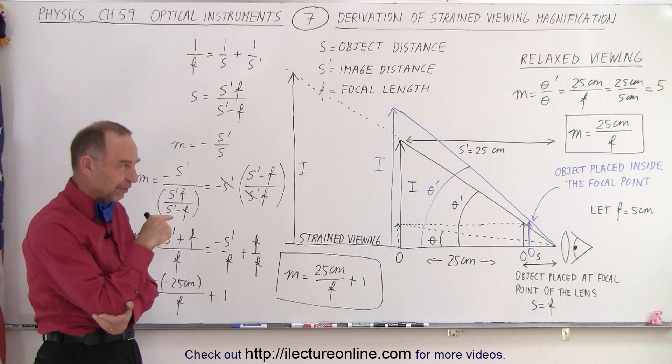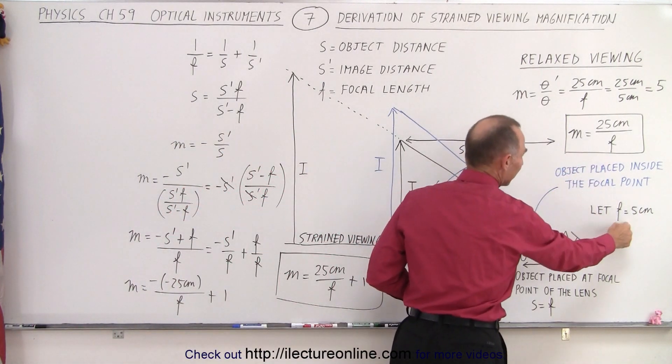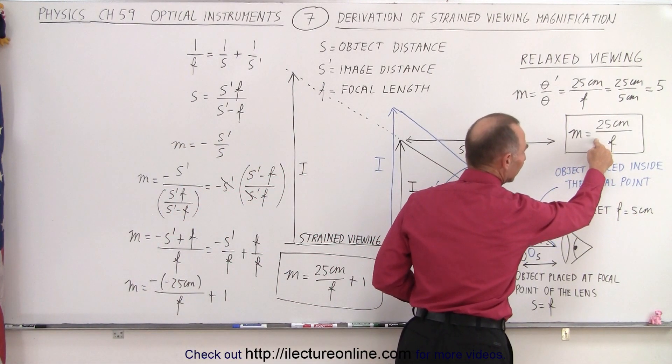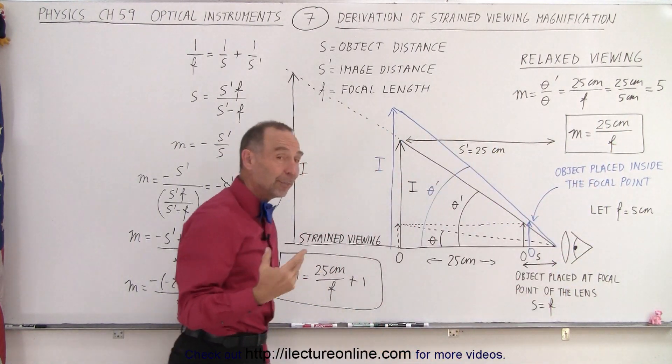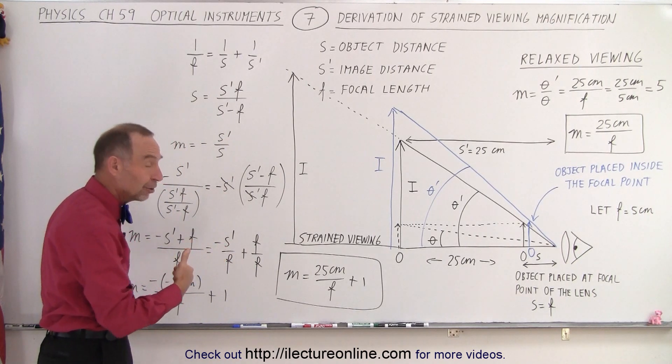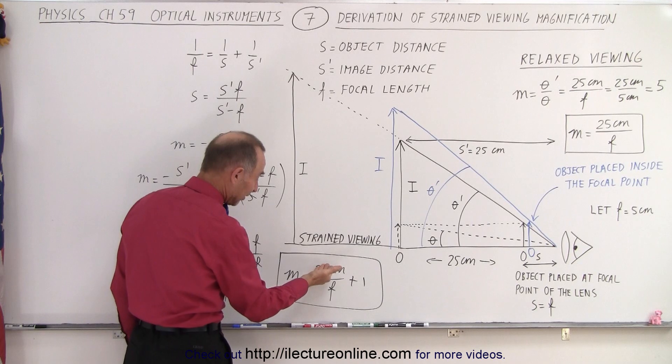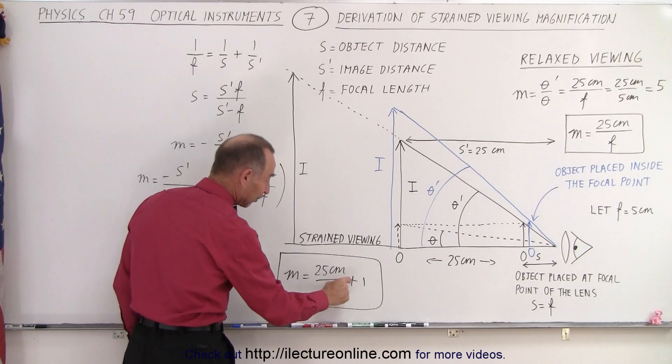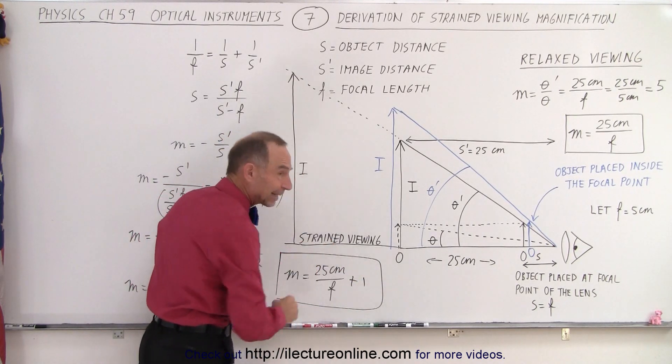Remember, on the previous video, we realized that if we use this equation, and we let F equals 5, that the magnification was equal to 25 divided by 5, which is 5. And on the previous video, we calculated the strained viewing magnification to be 6. And sure enough, you can see 25 centimeters divided by 5 is 5, 5 plus 1 is 6, you do get the correct answer.